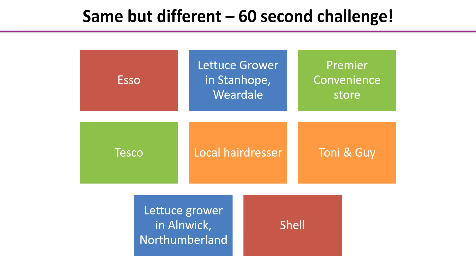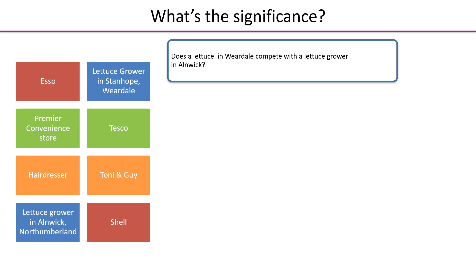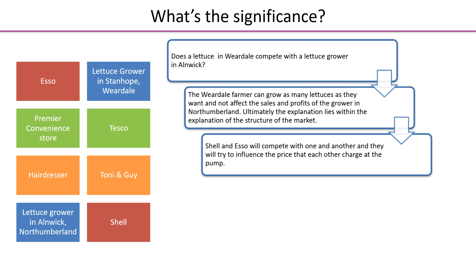Why does this matter? Take the lettuce growers first — the lettuce grown in Weardell and the lettuce grown in Northumberland are unlikely to compete directly; the Weardell farmer can grow as many lettuces as he wants without affecting the other grower's sales and profits. Shell and Esso, however, clearly compete: every time Shell wants to change its prices, it must consider what Esso will do and how that affects demand.